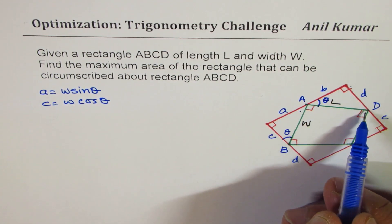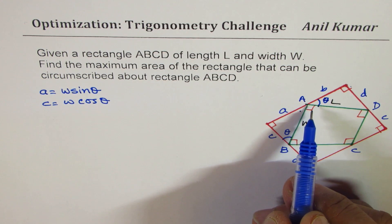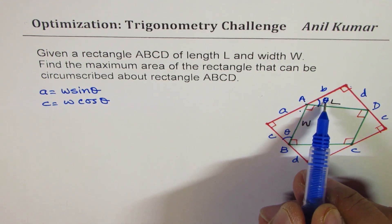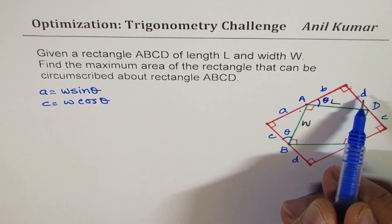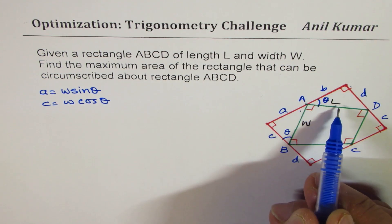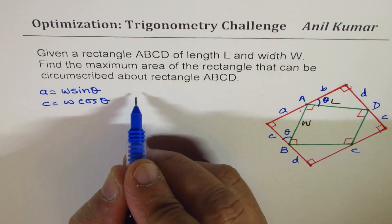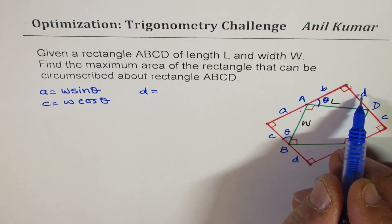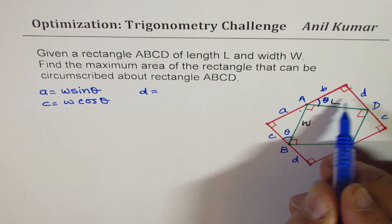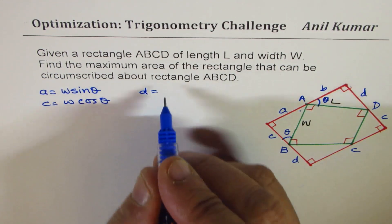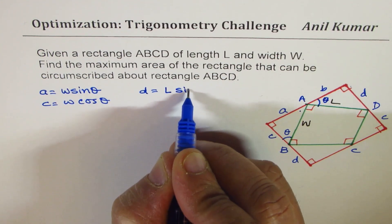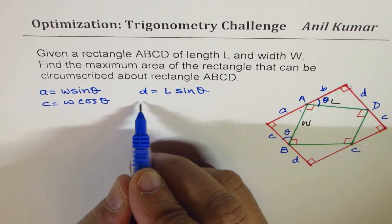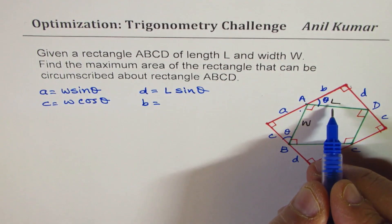If you look into the other triangle formed, we can see that this theta, side opposite to theta is D. It is a right triangle with hypotenuse L, and therefore, D could be written as L sine theta, since D is opposite to theta, right? So it is L sine theta, and B can be written as L cos theta.